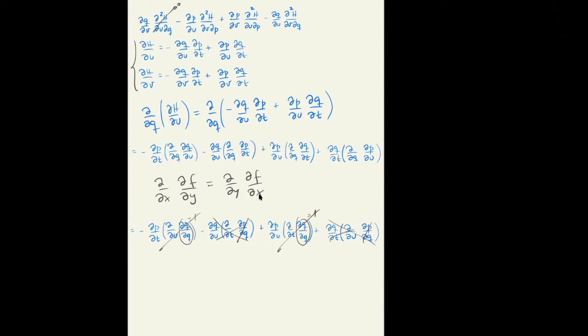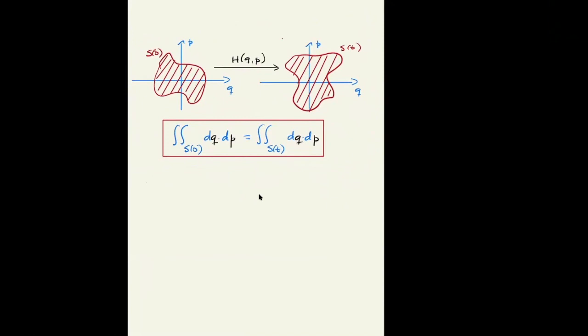And the same thing is going to happen for the other terms. They're all going to cancel and then the integrand is equal to zero, therefore proving the Poincaré invariant theorem that the change in the area in phase space by the action of the Hamiltonian is equal to zero. If you have a surface in phase space as S0 and the Hamiltonian acts on every point QP of this area, transforming it into another area as ST, the area of these two surfaces is going to be the same.